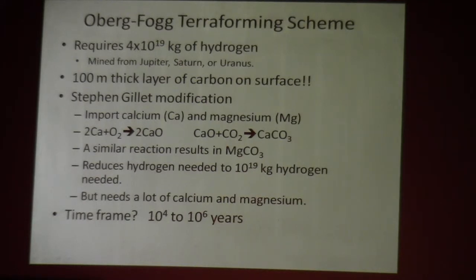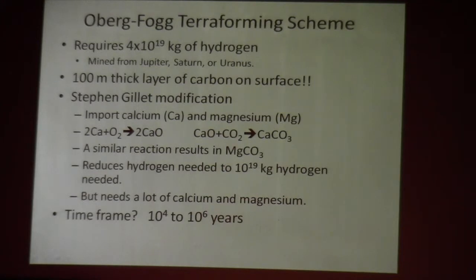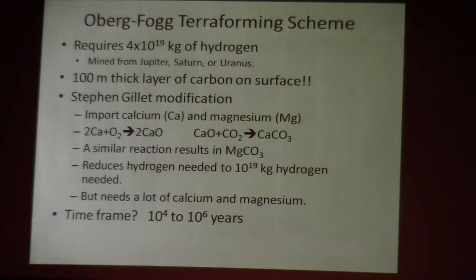In his paper, Fogg said it needs 4 × 10^19 kilograms of hydrogen to make that reaction work. That results in a 100-meter thick layer of carbon laying on the surface of the planet. If you're really good at genetic engineering, maybe that carbon could be in the form of little diamonds. Another modification: import calcium and magnesium from Mercury to make carbonates, which reduces the amount of hydrogen needed and are more stable and perhaps even useful. He estimated this will take 10,000 to a million years. So if you're going to think in terms of terraforming, it's got to be a long-term project — though advanced technology could probably shorten the time.